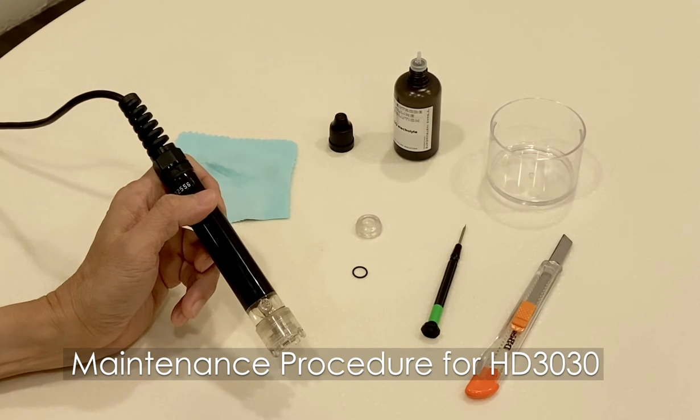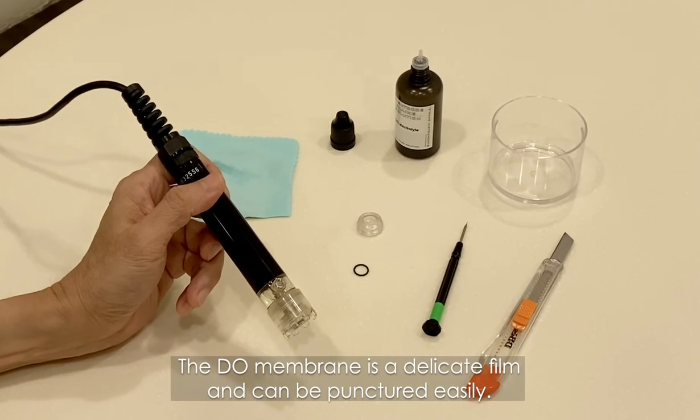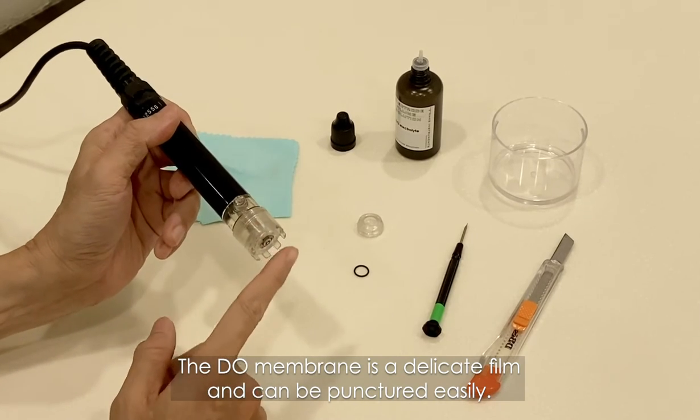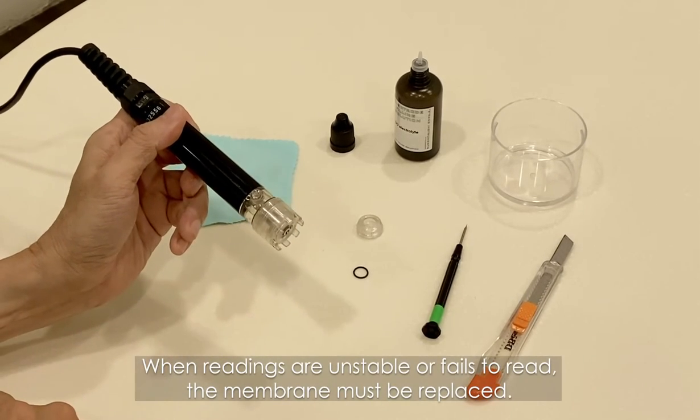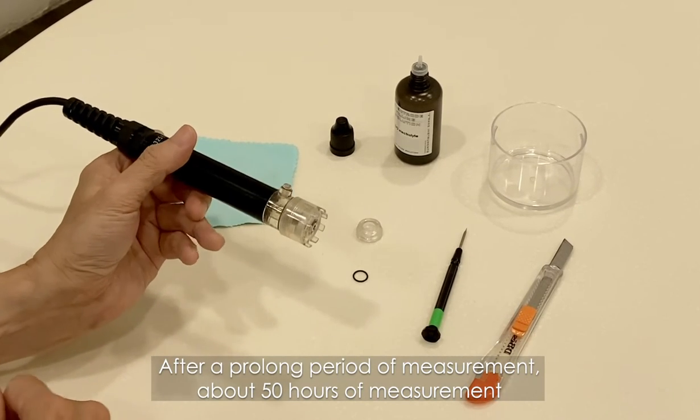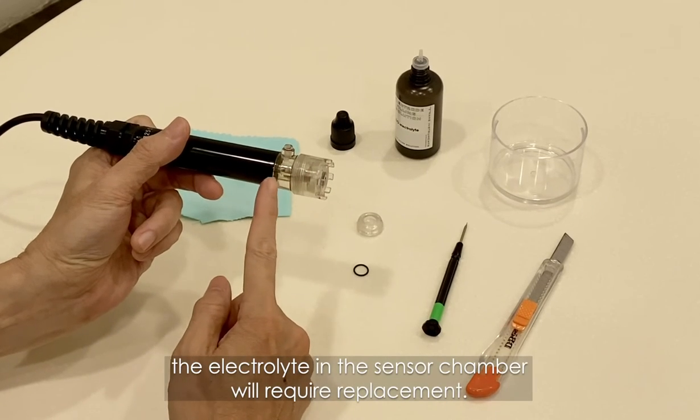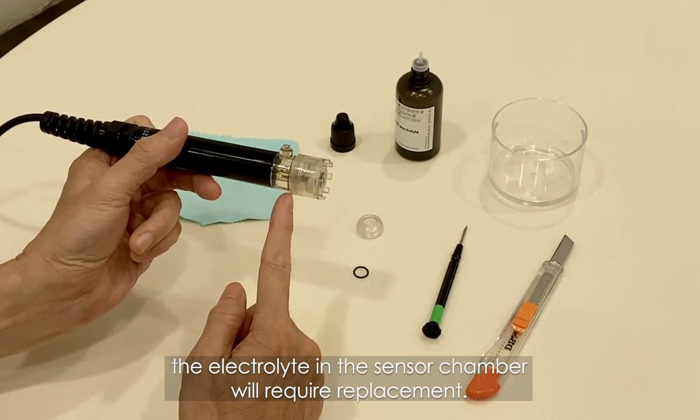Maintenance procedures for HD3030: The DO membrane is a delicate film and can be punctured easily. When readings are unstable or fail to read, the membrane must be replaced. After a prolonged period of measurement, about 50 hours, the electrolyte in the sensor chamber will require replacement.